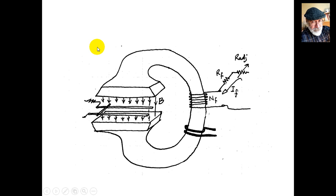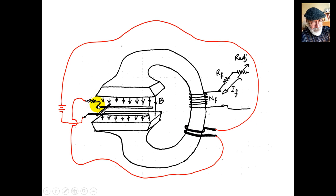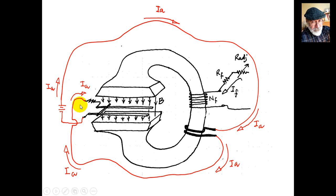Another possibility of excitation: I will neglect the field coil and concentrate on the series coil, which has very few turns. Here is the external battery. A wire runs from the positive terminal of the battery to the series coil S, and from the series coil we go to the armature. The S coil is in series with the armature coil — this is series excitation.